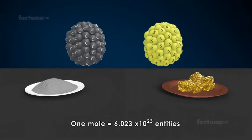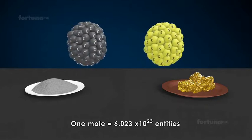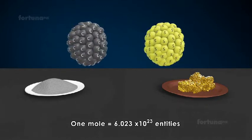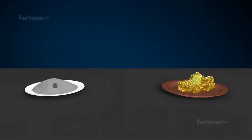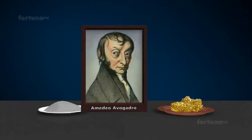One mole is the amount of a substance that contains 6.023 × 10²³ entities of that substance. This number is Avogadro's number, named after the 19th century chemist Amedeo Avogadro.